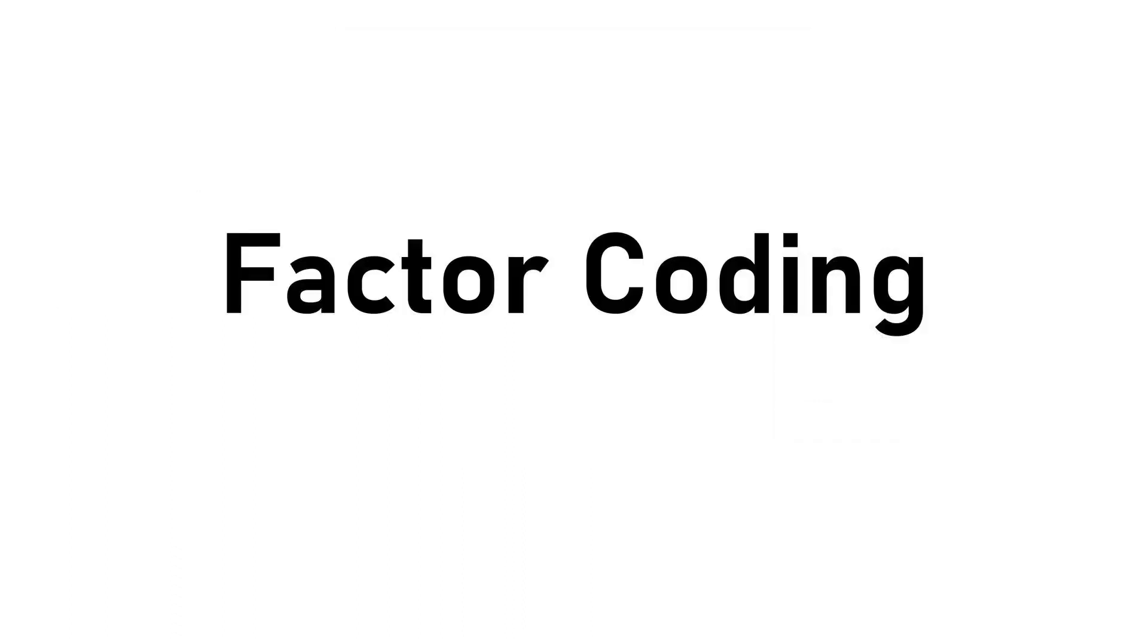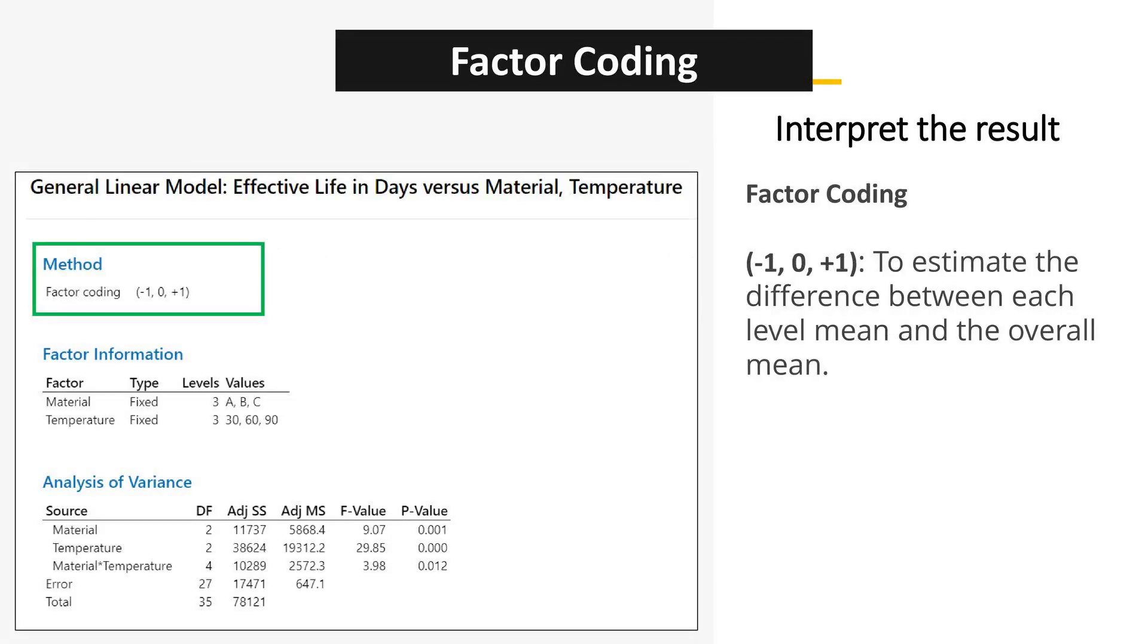Factor Coding translates the language of statistics into understandable terms, bridging the gap between numerical data and practical significance. Factor Coding with Levels minus 1, 0, plus 1, simplifies the interpretation of how each factor level deviates from the overall mean, offering clarity.